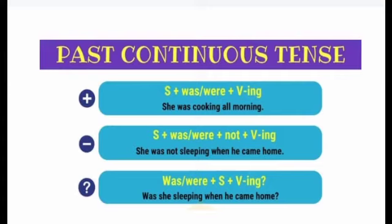اسی طرح interrogative sentences میں جو helping verb ہے — was یا were — subject کے accordingly وہ پہلے آ جائے گا، پھر subject آئے گا، پھر verb کی first form یعنی present participle، اور پھر object۔